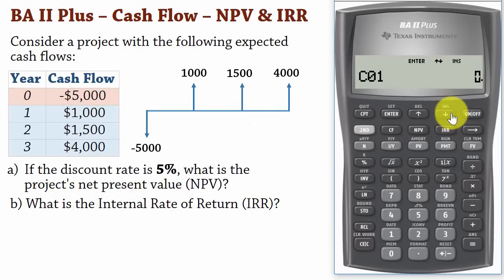Next, input the cash flow of 1000 for year 1. Enter. Press the down arrow button. The calculator shows F01 which basically represents the frequency of cash flow. If a particular cash flow occurs more than once in a row, we just enter the frequency here instead of entering them one by one. Since 1000 occurred only once, just leave it at 1 and press the down arrow button.